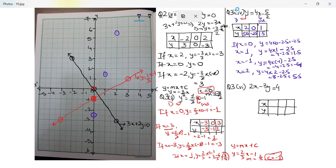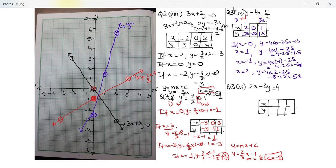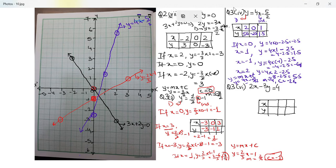Now let me join them using a scale. This line that I have plotted is y is equal to 4x minus 5 by 2. Comparing y equal to mx plus c, m here is 4 and c is negative 2.5. Notice my line is passing through negative 2.5 on the y-axis, and m is 4 which is positive — so the slant is upward. And notice that 4, the slope of this line, is more than 2 by 3 which was the slope of the previous line, so this is slanting even more steeply.